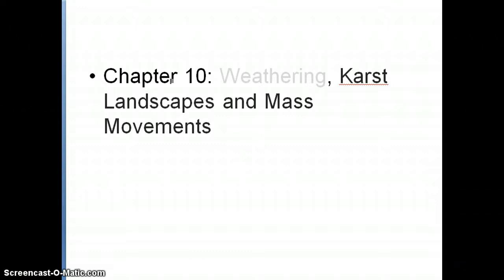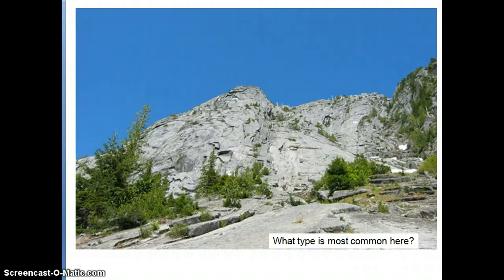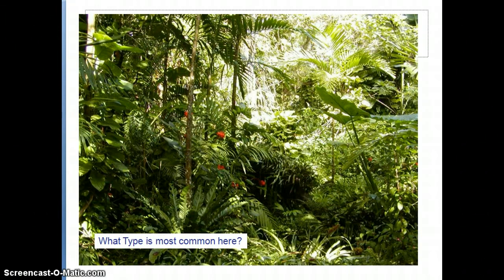Let's finish this chapter looking at karst landscapes and mass movements. Just as a review, what would you think would be the most common type of weathering that would occur in a landscape like this, physical or chemical? And how about that landscape? What would be the most common type that you would see there, physical weathering or chemical weathering?